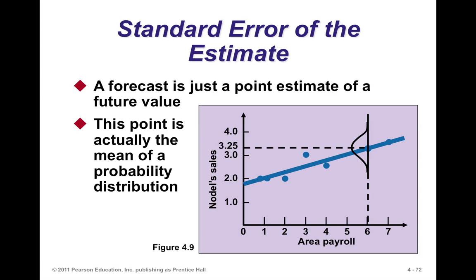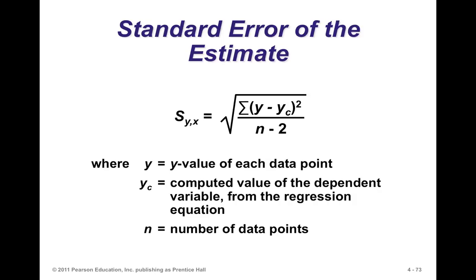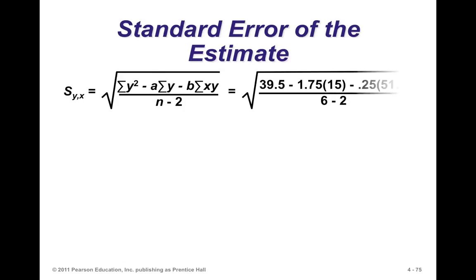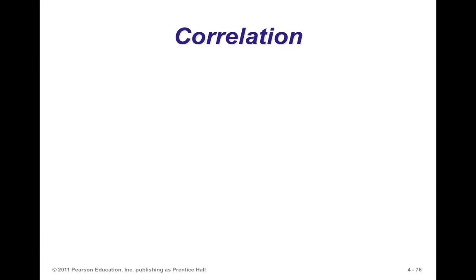Just as in regression, you can get the standard error of the estimate — referred to as se or syx in statistics. It is basically the difference between the actual and the prediction: square those differences, divide by n minus 2, and you get the standard error of the estimate. That is useful in calculating confidence intervals for predictions, giving you not just a point estimate of your forecast but a confidence interval.